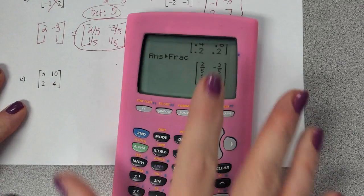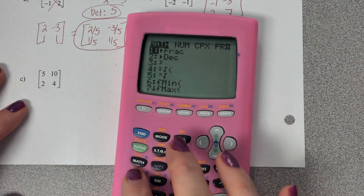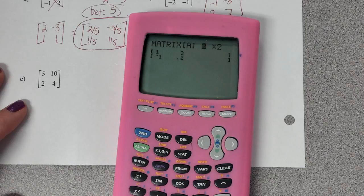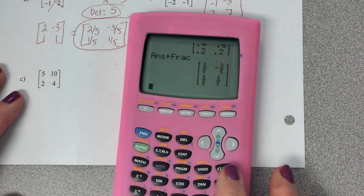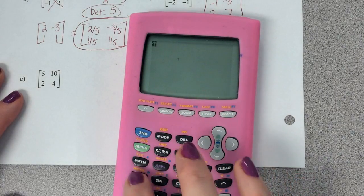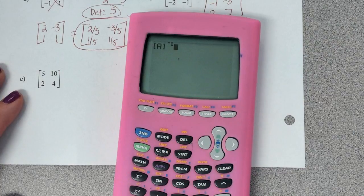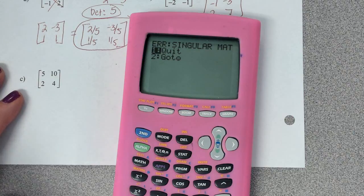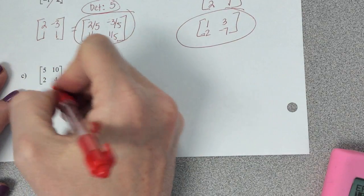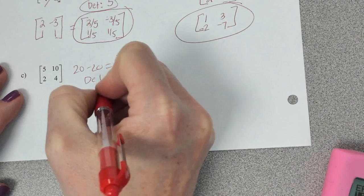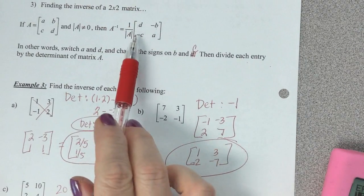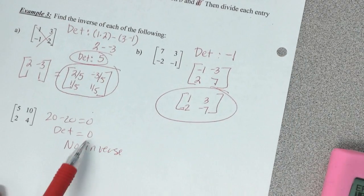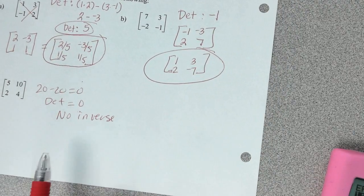Let's do letter C on the calculator. Go to matrix, edit, enter the matrix. Go back to matrix, get it, and then do x to the negative 1. What happened? It says error. If you look at this determinant, 20 minus 20 gives us zero. If the determinant is zero, that means there is no inverse, because we're not allowed to divide through by zero.